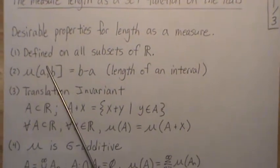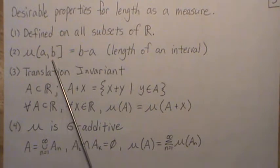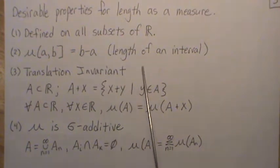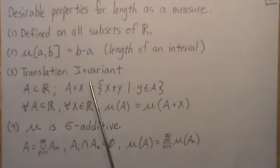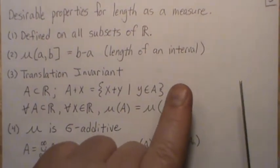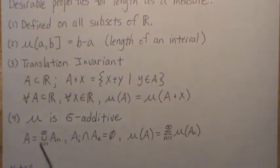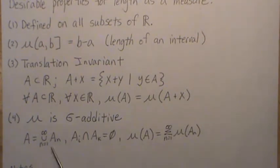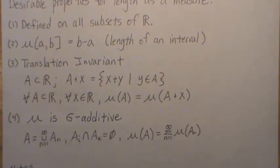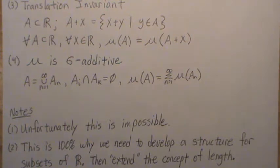A few desirable properties for length as a measure — there are four criteria. One, it's defined on all subsets of R. Two, if we're looking at an interval, the length is the standard measure B minus A. Three, we want it translation invariant — if we move an interval by adding the same quantity, its length should be unchanged. Four, we want it sigma additive, also called countably additive: the measure of a union of disjoint sets should equal the sum of the measures of those disjoint sets.